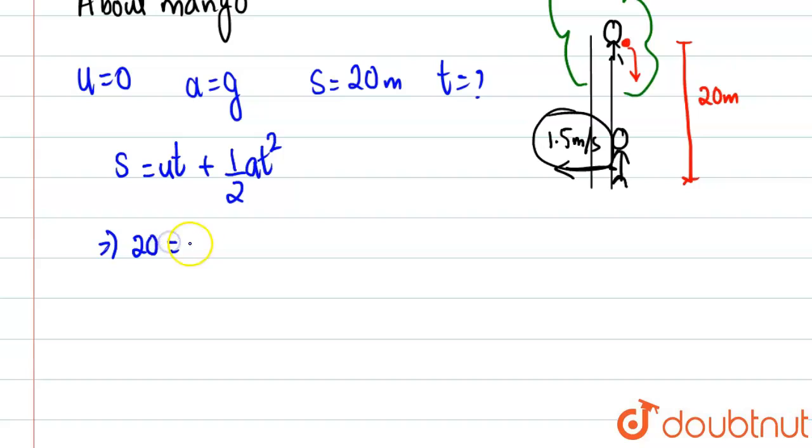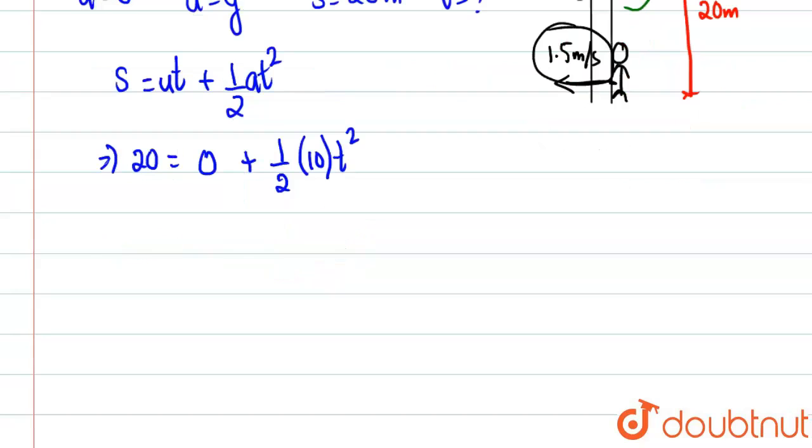So s will be equal to 20. The ut quantity will become zero because u is zero, plus half into a, which is basically 10, into t squared. So we will get the value. This and this will get cancelled by five times, so t squared will come out to be...